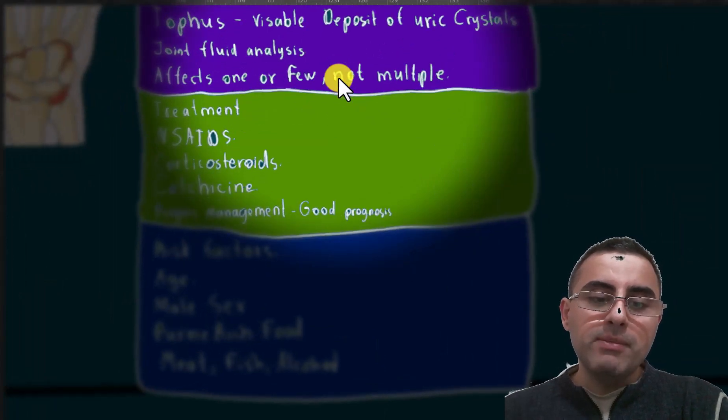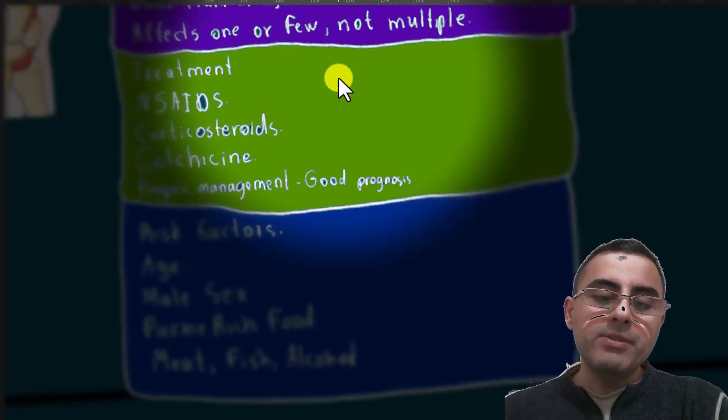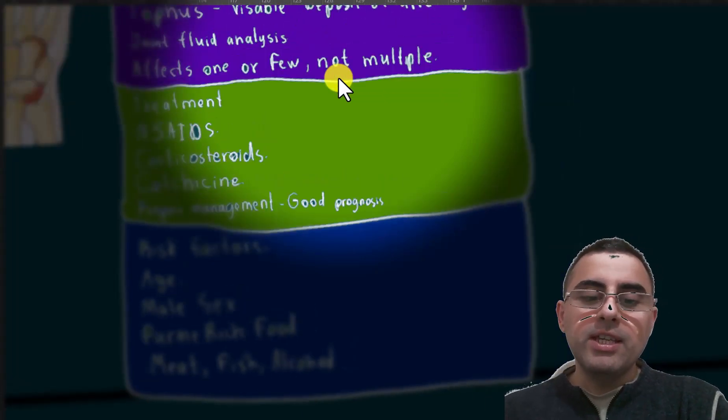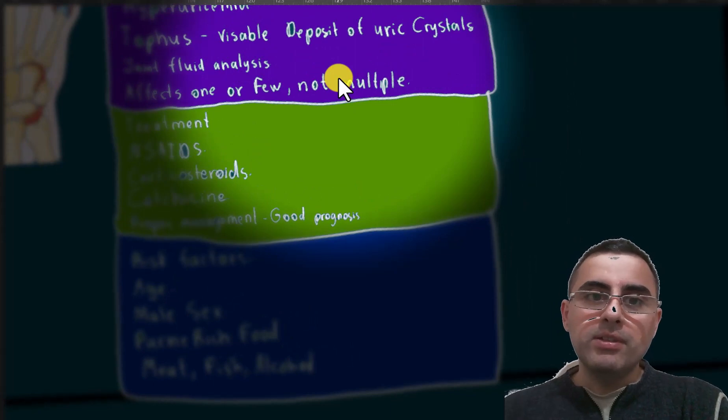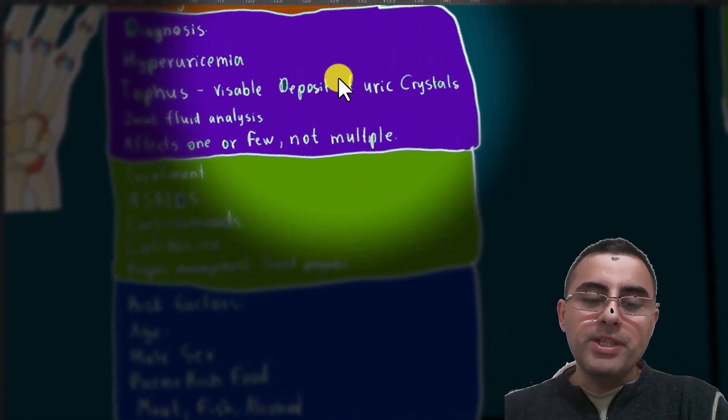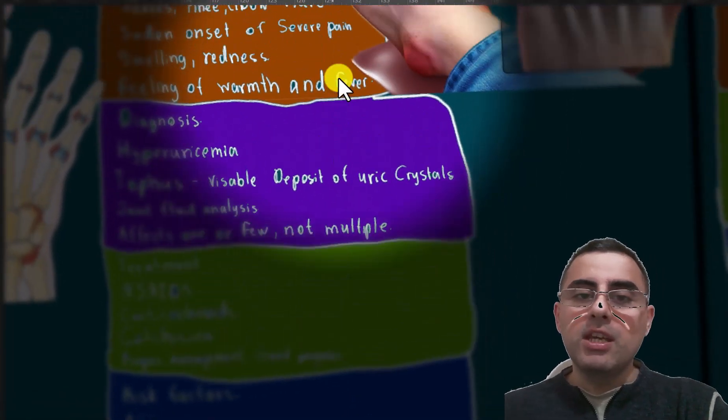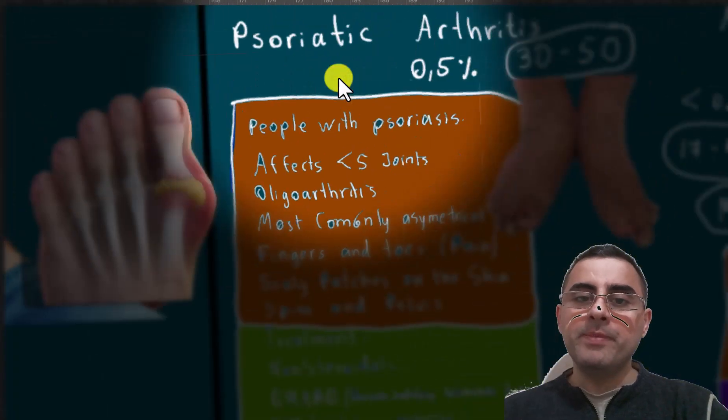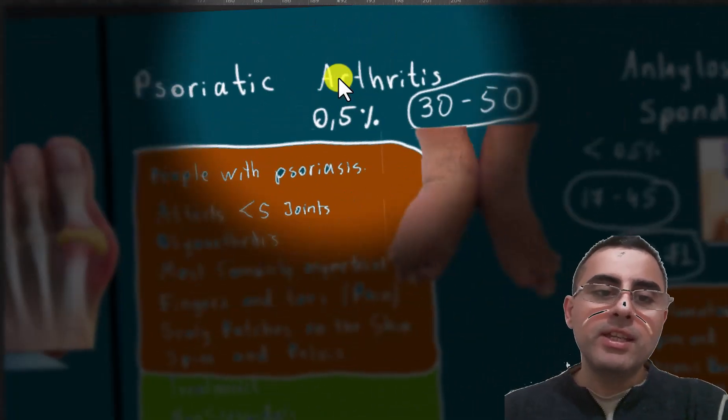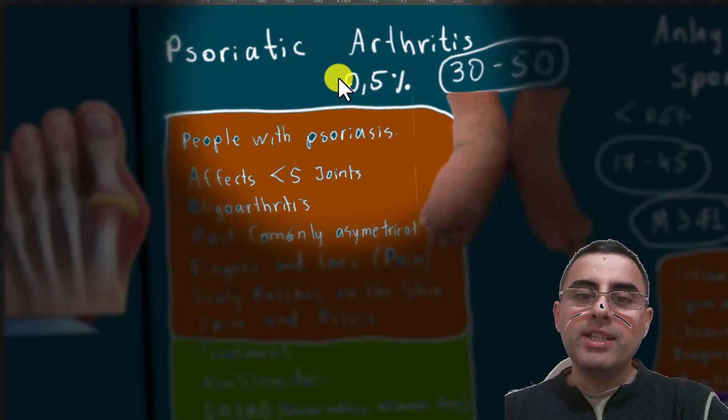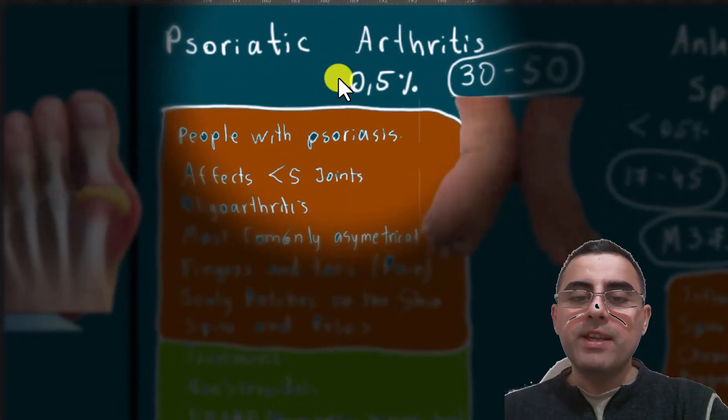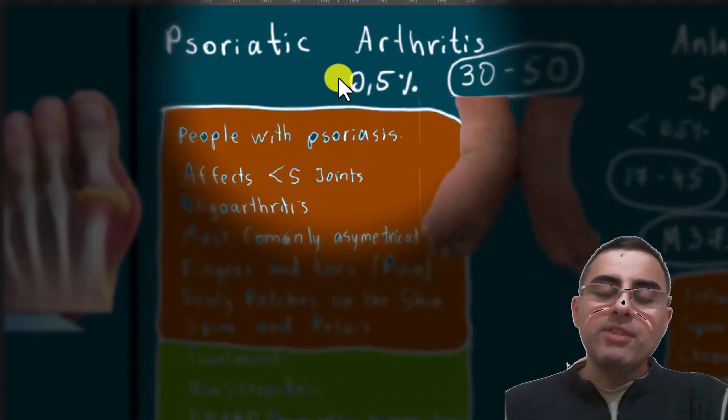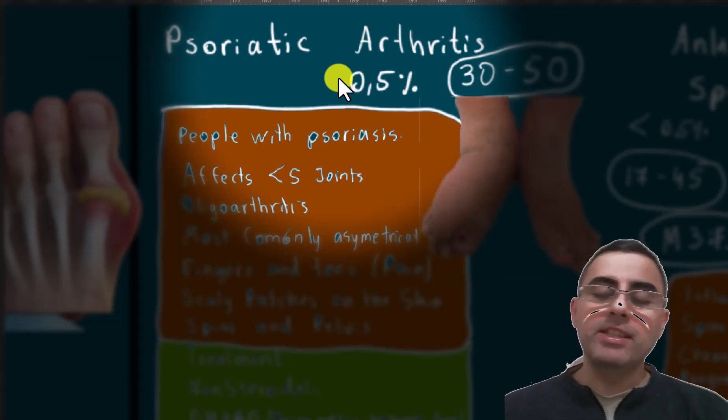Risk factors for gout are age, male sex, purine-rich food, which means when a person's diet is rich with meat, fish, and alcohol. The fourth important disease is psoriatic arthritis.